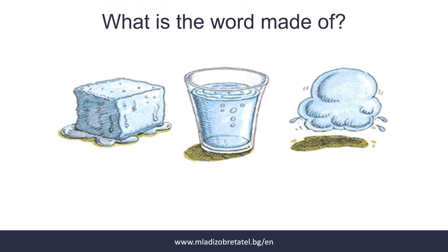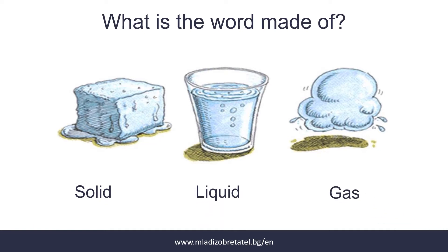You might think, what is the world made of? Everything you see around you is made of matter. The desk, the paper, the computer, even yourself. Matter is something that has mass and takes up space. It can be found in three states: solid as ice, liquid as water, and gas as water vapor.